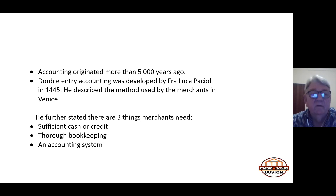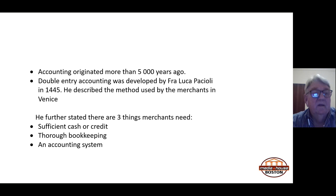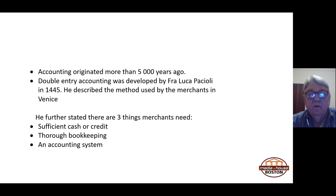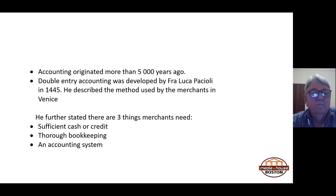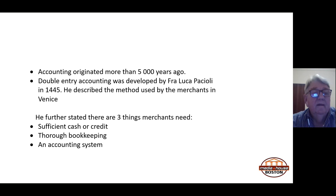The double entry method means there is a debit and a credit for every transaction — for every debit there must be a credit, and for every credit there must be a debit. Pacioli further stated three things merchants need: sufficient cash or credit — credit being access to cash; thorough bookkeeping, so you know where your money is coming from and going, otherwise you will lose your money, stock, and assets; and an accounting system in which to record everything.